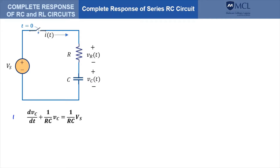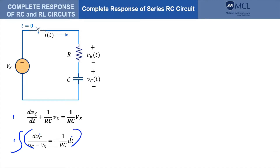Here is the differential equation again. We can rearrange the variables such that it looks like this. Take note that our variables are V sub C and the time T. We have rearranged it in this manner so that we can solve the differential equation using separation of variables. To solve this, we integrate the equation — we need to integrate both sides. The integration of the left side will give us a natural logarithmic function, while the right side is simply a function of time. That will give us this equation.